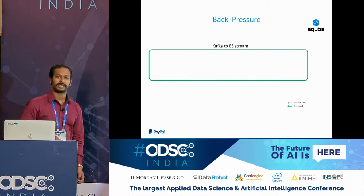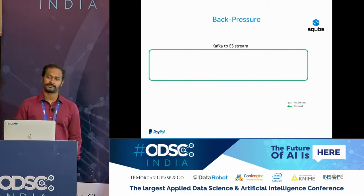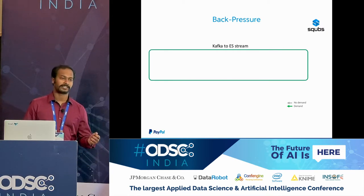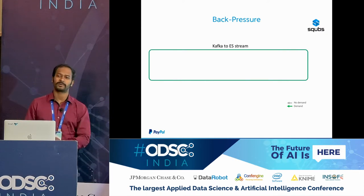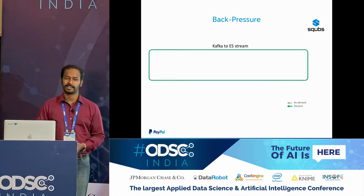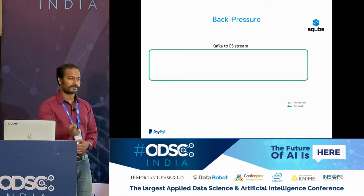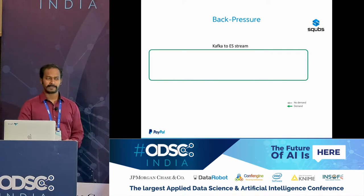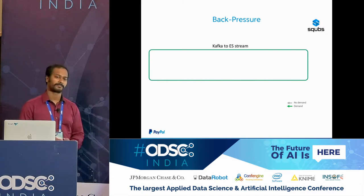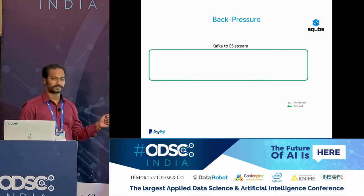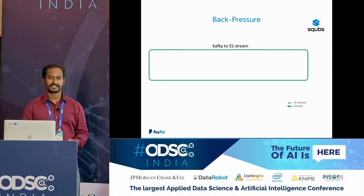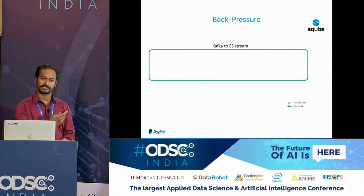Before explaining backpressure, let me explain reactive streams. A stream is like a river — it has a starting point, like a mountain, and an endpoint, like the sea, with multiple towns in between. Reactive streams are similar, but with one key difference: backpressure. In a river, you can't stop the water. In software streams, the sink — the sea — can control how much data it wants to receive.